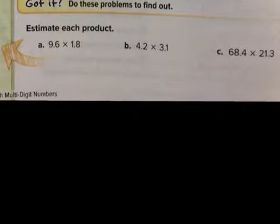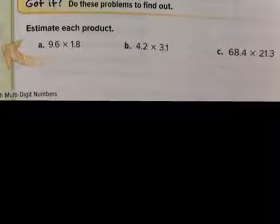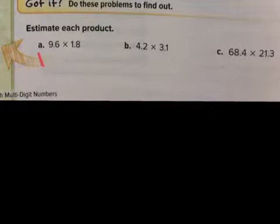Now let's estimate each product. 9.6 times 1.8 — both are above 5, so they both round up. When you round both numbers in the same direction, the estimate is a little more off but still pretty close. We round up to 10 times 2, so A would be 20.